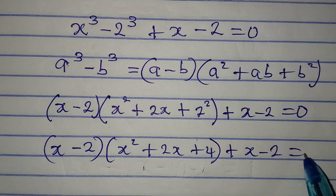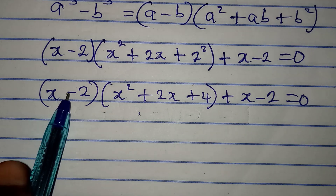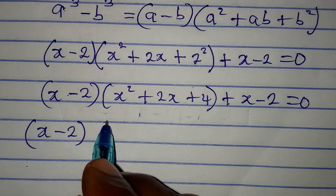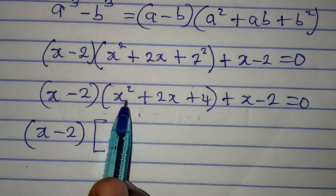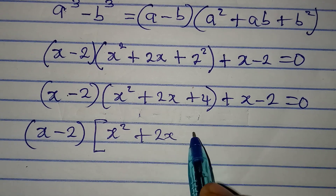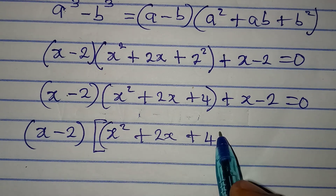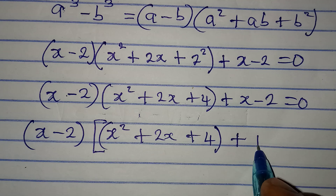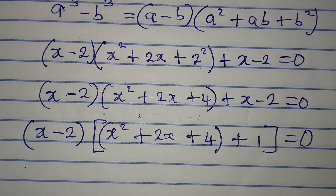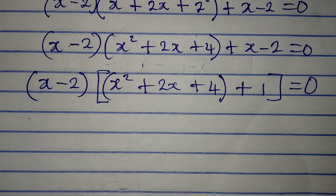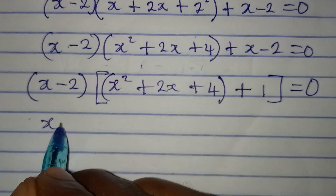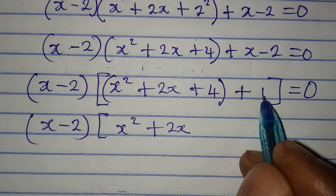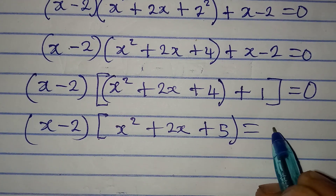So we have (x - 2)(x² + 2x + 4) + (x - 2) = 0. Now I'm going to factor out (x - 2) as a common factor. That gives us (x - 2) times (x² + 2x + 4 + 1) = 0, because when we factor out (x - 2), a 1 is left over from the second term. Combining gives us (x - 2)(x² + 2x + 5) = 0.